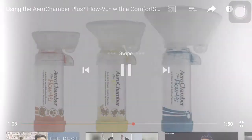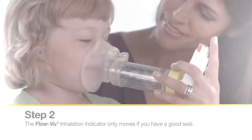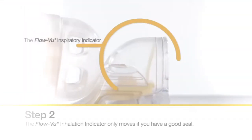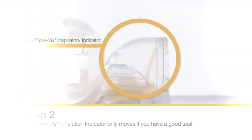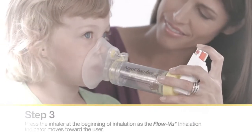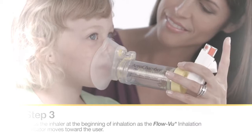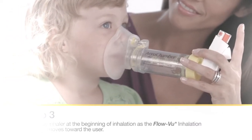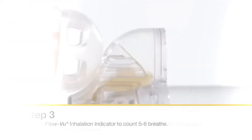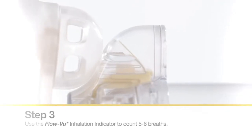Whatever air chamber or spacer you use, make sure it says anti-static — that's very important. Also, the only air chamber that has a dose indicator is the AeroChamber Plus. If you have a child and you're not sure whether they actually inhaled the dose, that chamber has a little flap that moves every time the child inhales. That's your indicator that they got the dose. Other spacers don't necessarily have that feature.